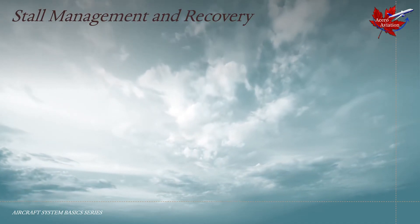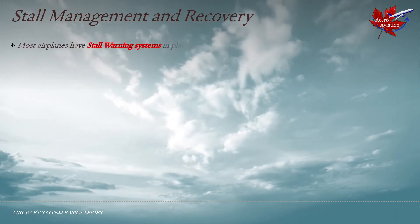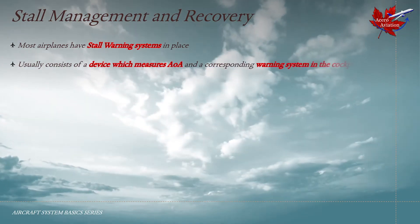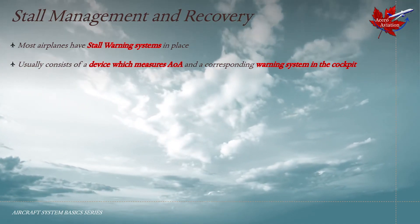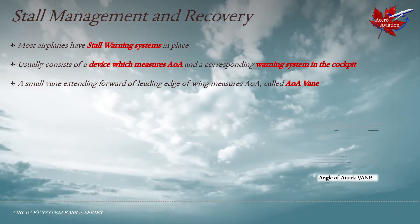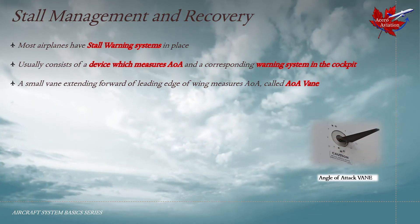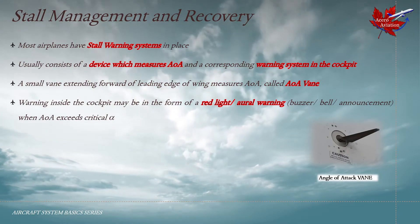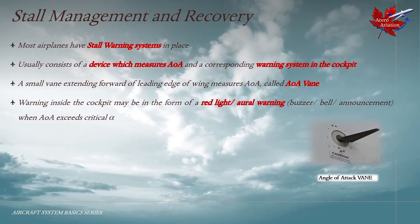Let us now talk about stall management and recovery. Most airplanes have stall warning systems in place. This usually consists of a device which measures angle of attack and a corresponding warning system in the cockpit. A small vane extending forward of the leading edge of the wing measures angle of attack, called the AOA vane. The warning inside the cockpit may be in the form of a red light or aural warning, a buzzer, a bell, or an announcement when the angle of attack exceeds critical alpha.